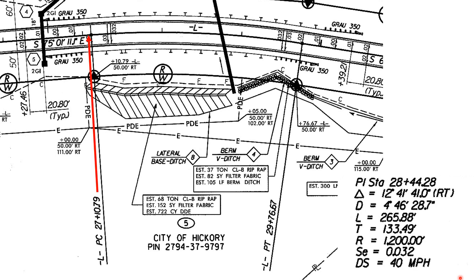We have the PC of the curve and the PT of the curve. PC is the point of curvature; PT is the point of tangency. So we would be on the tangent, then on the simple circular arc between the PC and the PT, and then returning to the tangent. One of the things we're going to zoom in on is looking at this cross-section element.